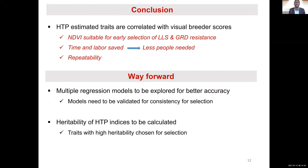HTP estimated traits are highly correlated with visual breeder scores. NDVI in particular is suitable for early selection for LLS and GRD resistance — selection can be made as early as 12 weeks, which is a month away from harvest time. By doing so, we are able to save time and labor. Because there is consistency in the data, anyone can collect this data using these tools without requiring one designated person.